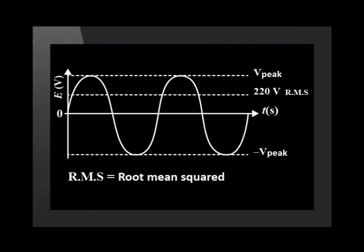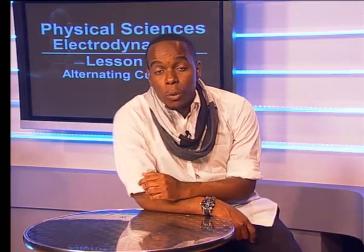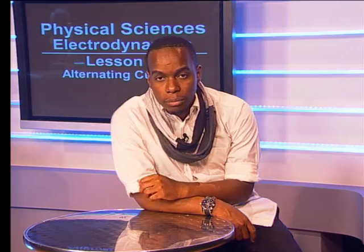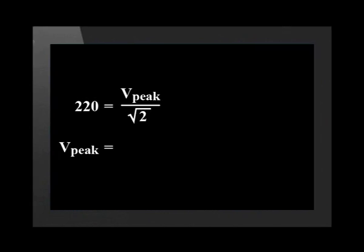This higher value is often called the peak voltage — it is marked as the highest and lowest voltages that can be reached during the cycle. There is a mathematical relationship between the two voltages, which is where the term root mean square comes from. The V-RMS is calculated by dividing the peak voltage by the square root of two. For South Africa's RMS voltage of 220 volts, substituting into the equation gives a peak voltage of 311 volts.